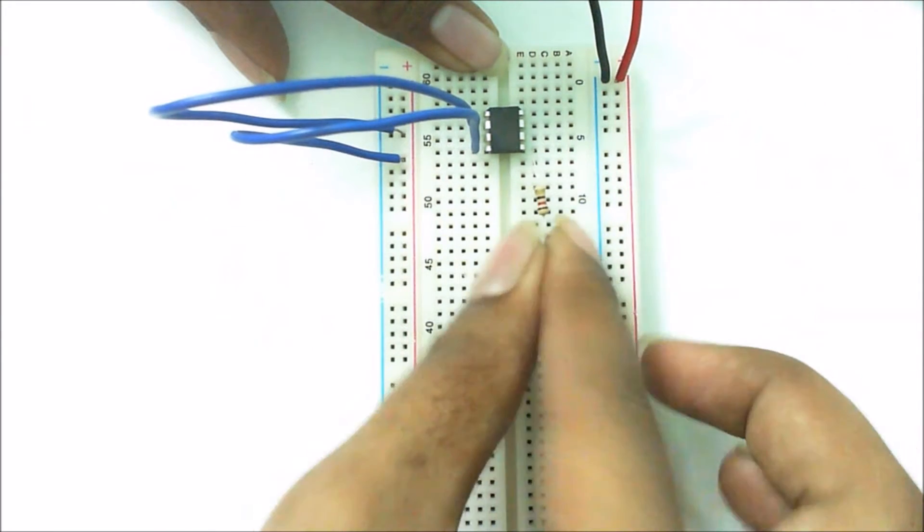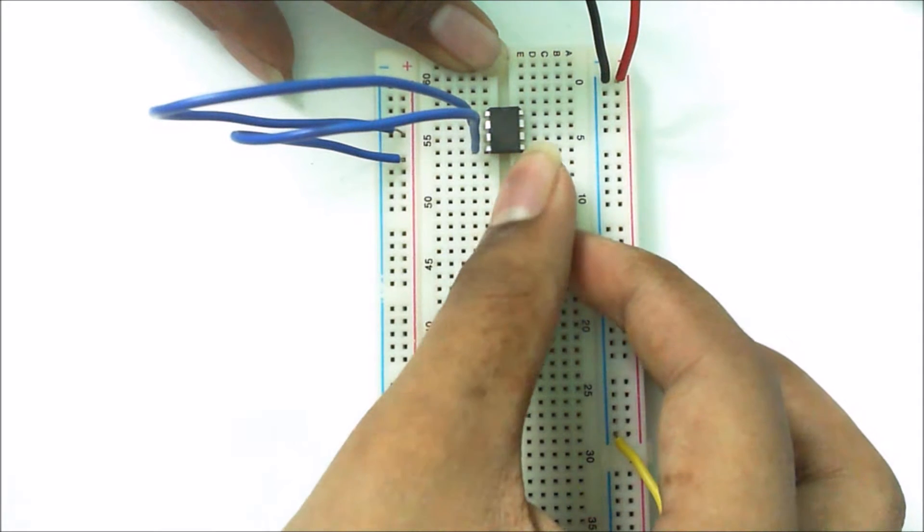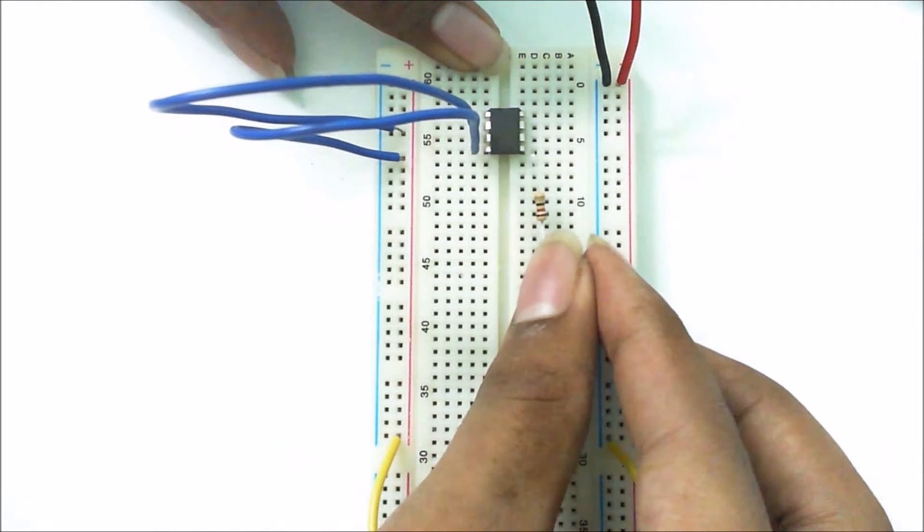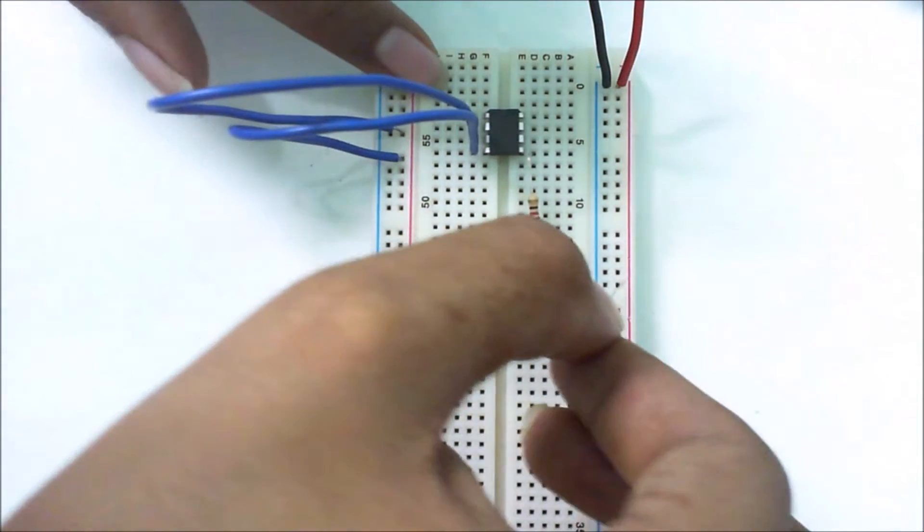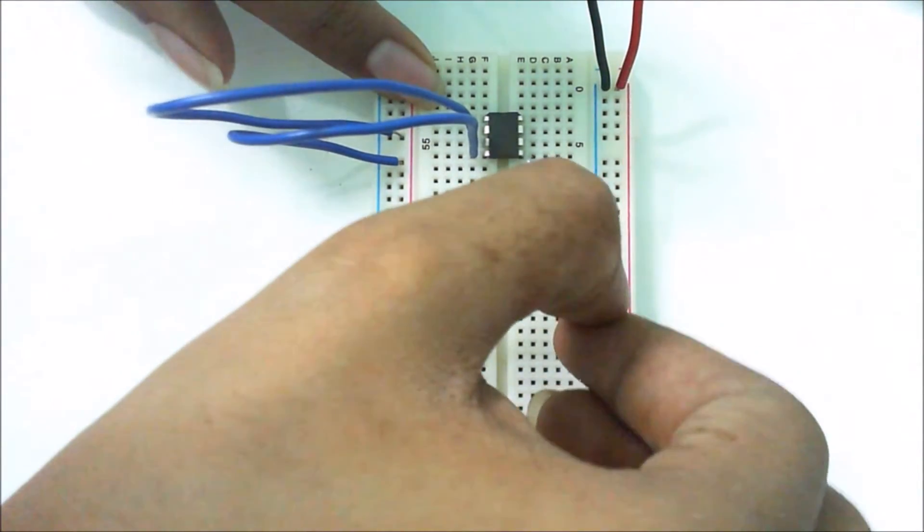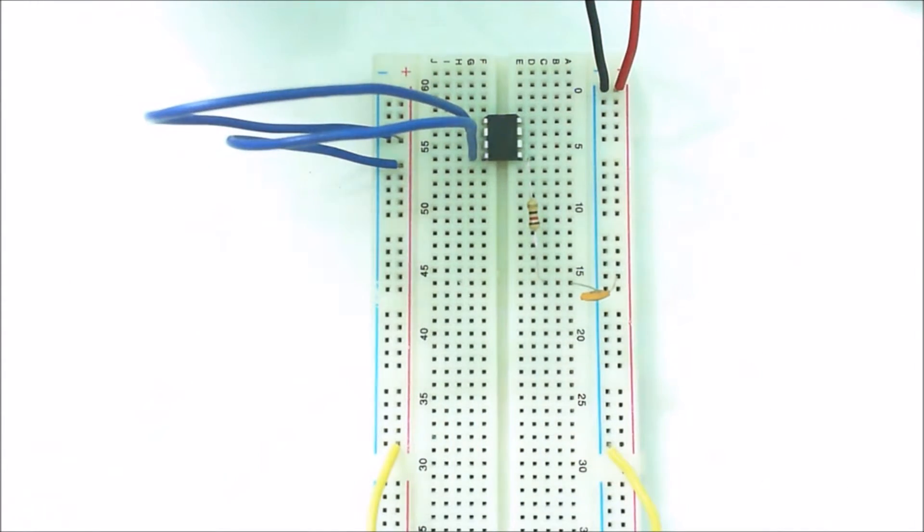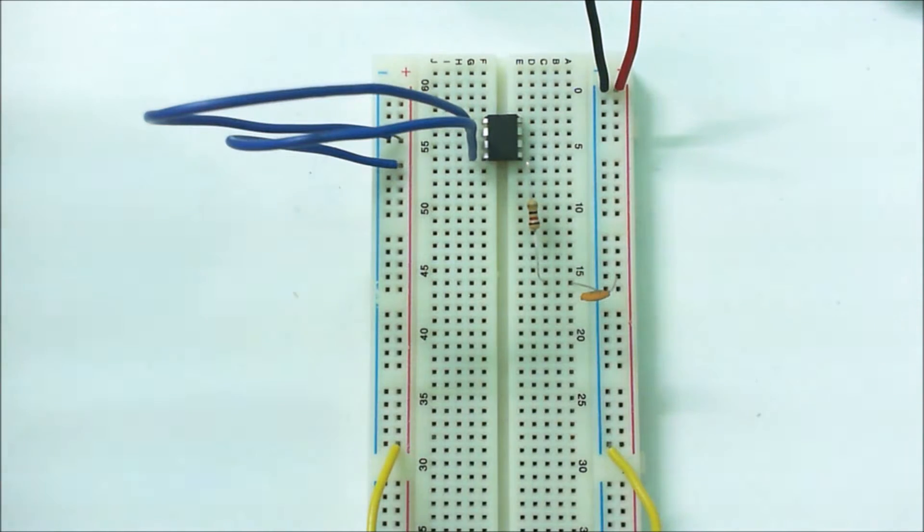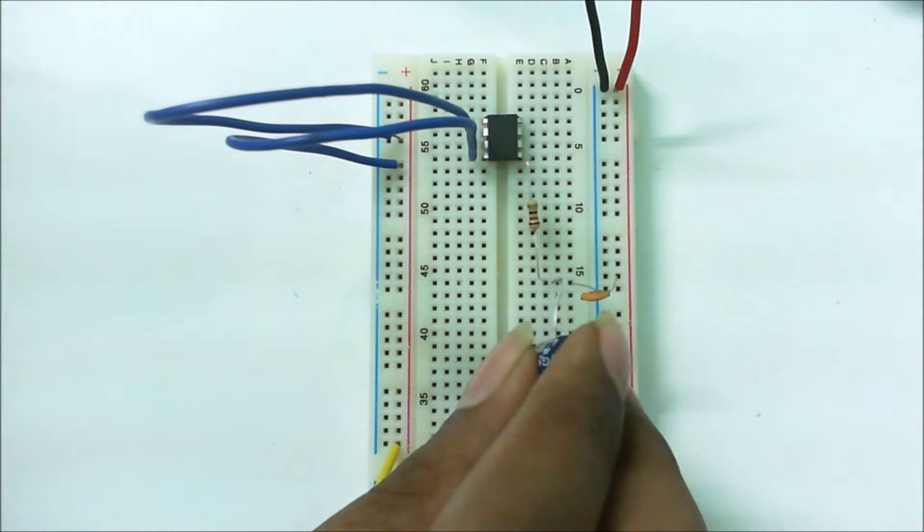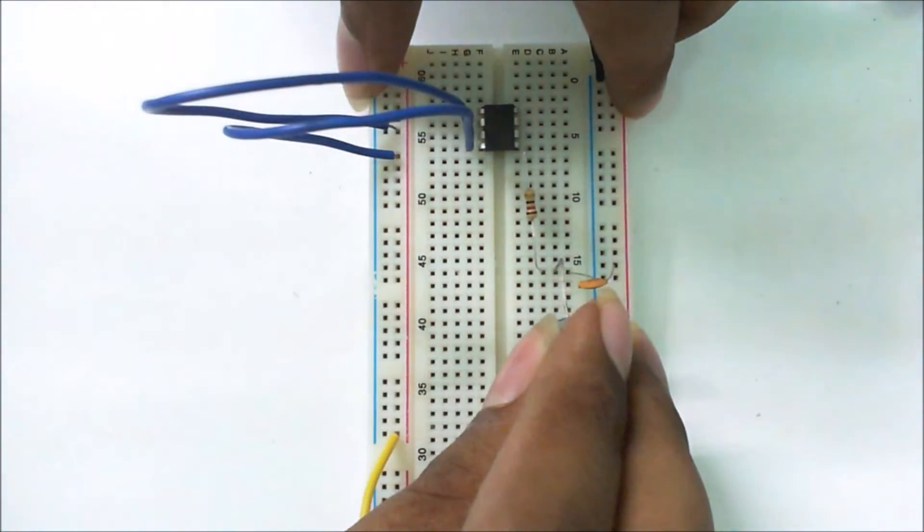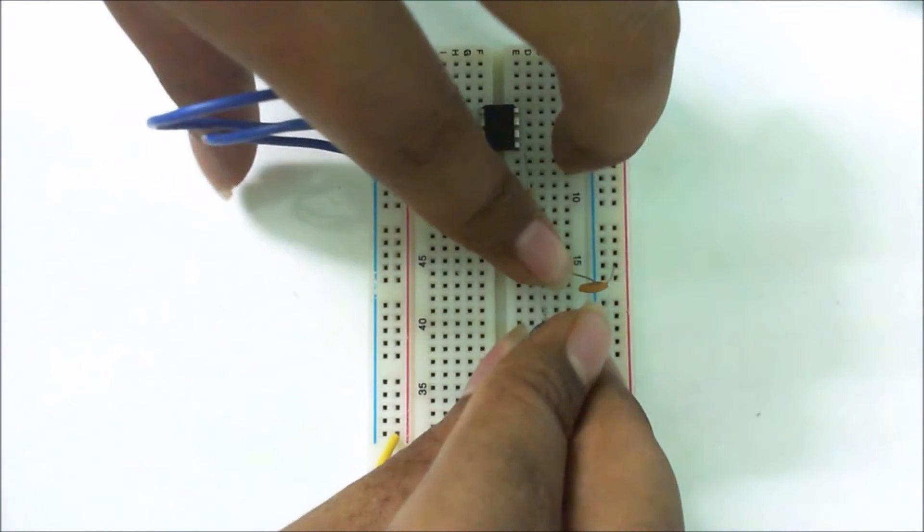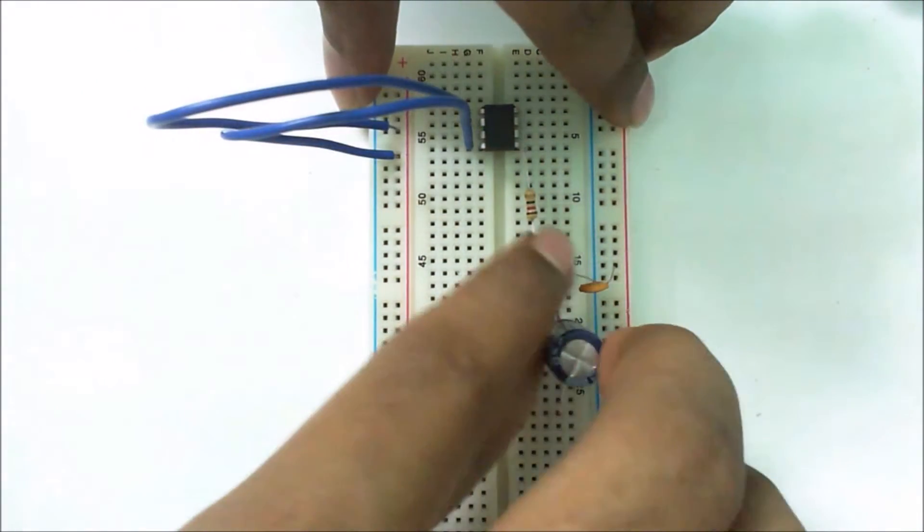Insert the terminal properly otherwise it may not give proper results. Now connect a 0.1 microfarad capacitor to the end terminal of the 10 ohm resistor and connect the other terminal of the 0.1 microfarad capacitor to the positive terminal of the battery. Now connect the positive terminal of a 10 microfarad capacitor in between the 10 ohm resistor and the 0.1 microfarad capacitor.